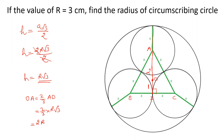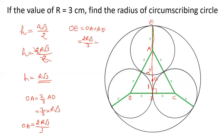So OA value is 2r root 3 by 3. Now, the radius of the circumscribing circle OE equals OA plus AE. We have calculated OA as 2r root 3 by 3, and AE equals r. So OE equals 2r root 3 by 3 plus r, taking r as common: OE equals r times (2 root 3 plus 3) by 3.